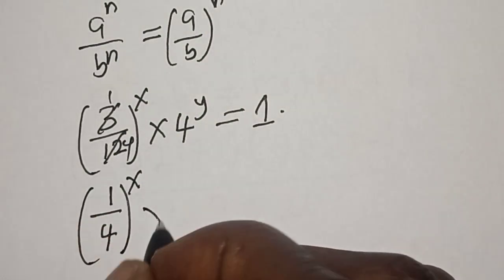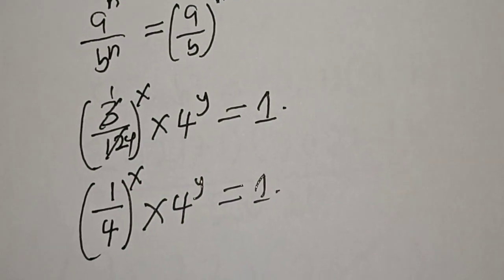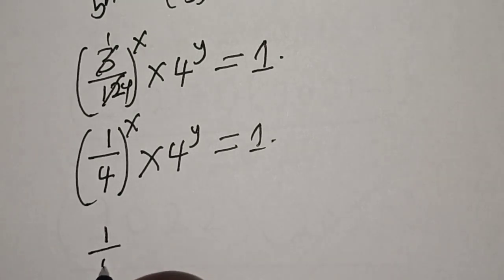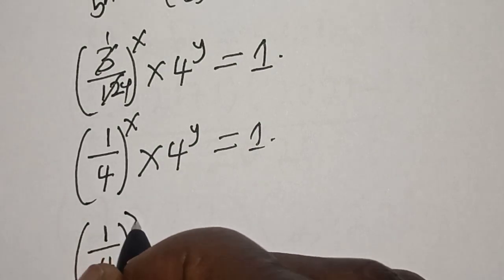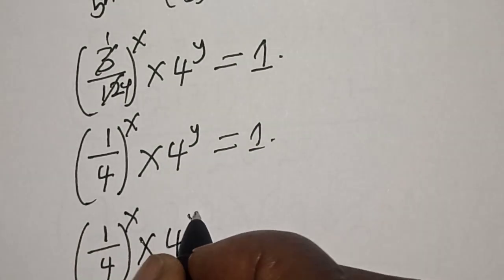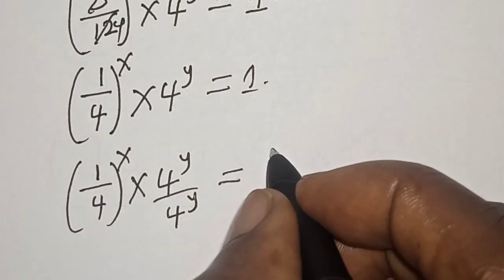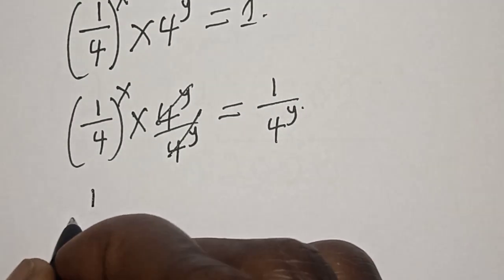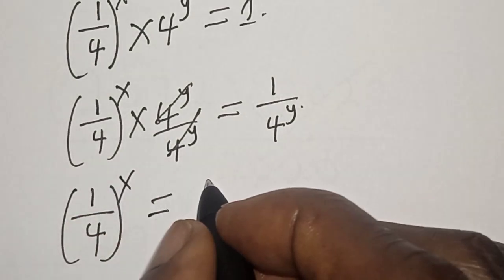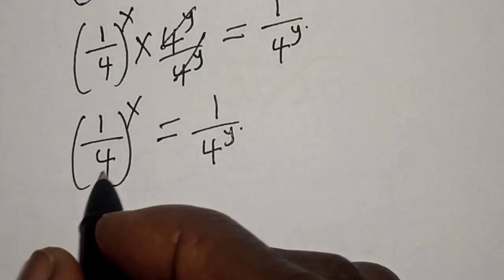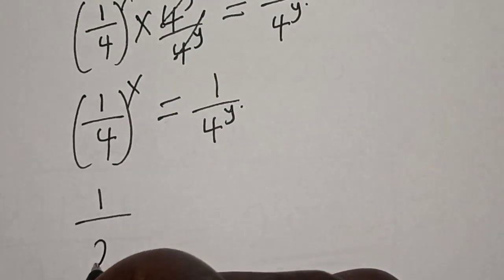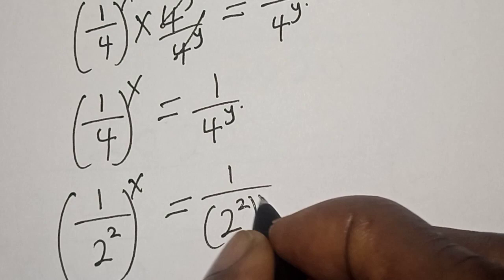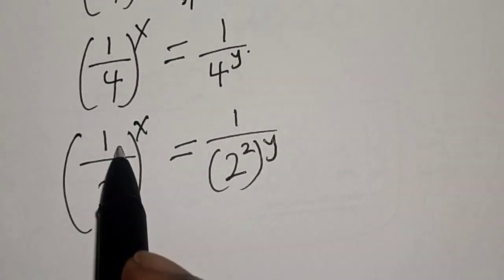Now 3 over 12 simplifies to 1 over 4, so we have 1 over 4 raised to power s, multiplied by 4 raised to power y, is equal to 1. Let's divide both sides by 4 raised to power y. The 4 raised to power y terms cancel, giving us 1 over 4 raised to power s equals 1 over 4 raised to power y. We can rewrite 4 as 2 squared, so this becomes 1 over 2 squared raised to power s, equal to 1 over 4 raised to power y.